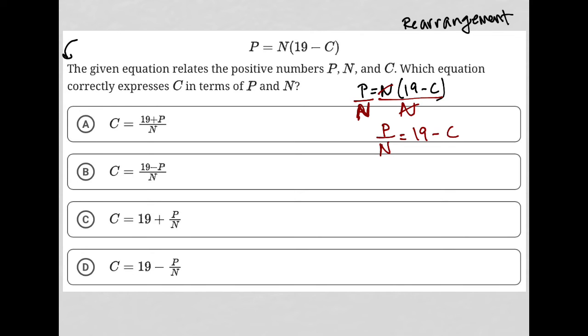I'm a bit closer now to having C isolated. The next thing I would do is subtract 19 from both sides. Now my 19s will cancel out on the right-hand side. So I'd have P over N minus 19 equals negative C.